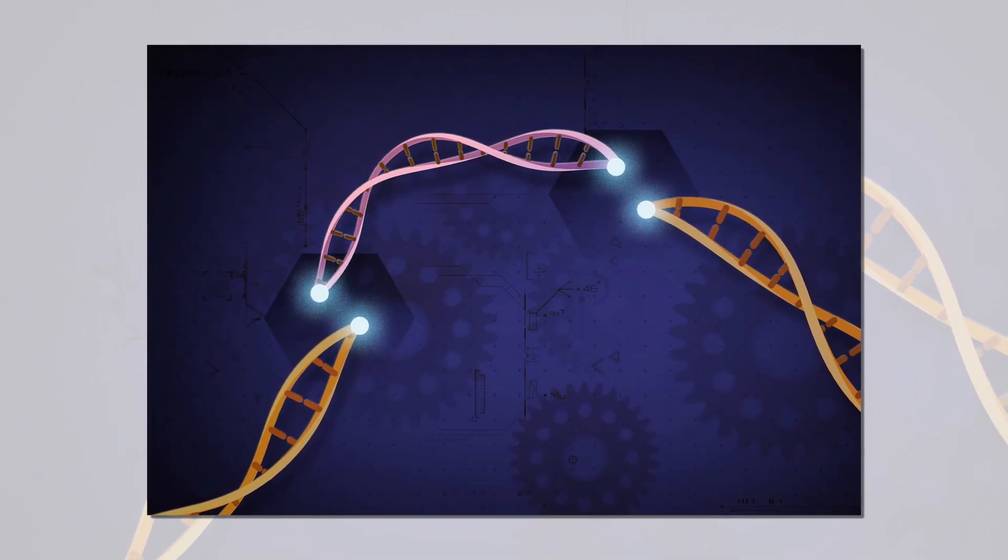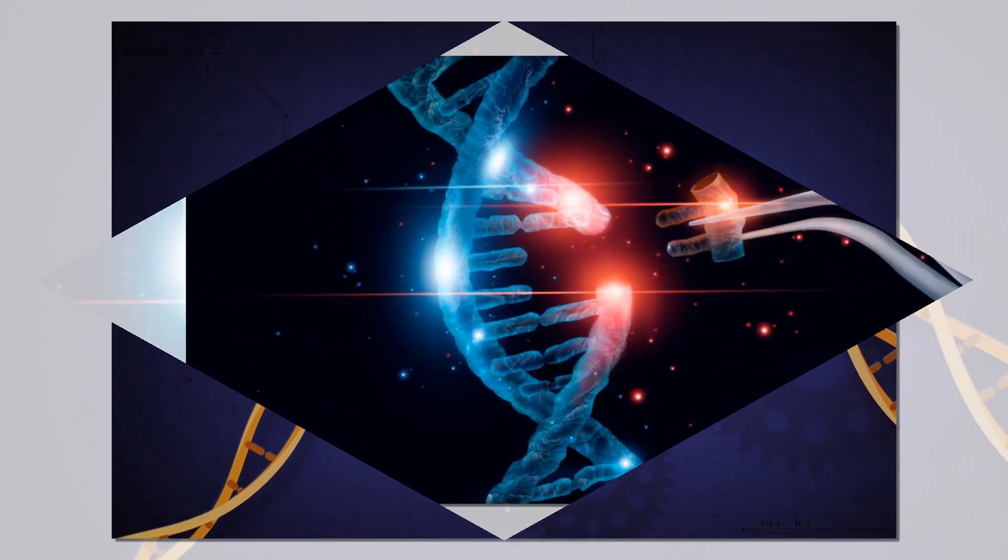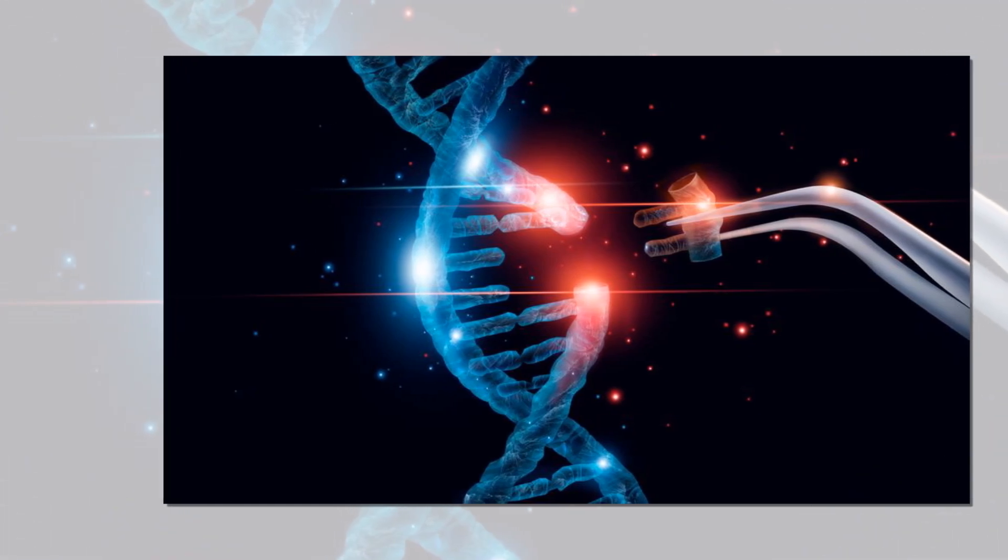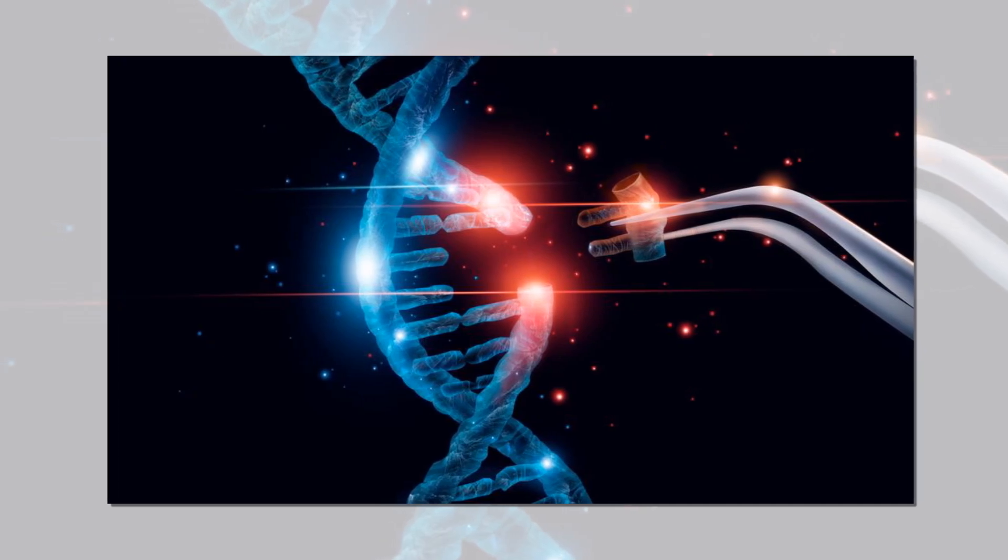When the template matches a sequence inside the bacterium's genome, CRISPR-Cas9 knows it needs to cut it out. By giving the editing complex different templates we can make it cut out or even insert any kind of DNA sequence.